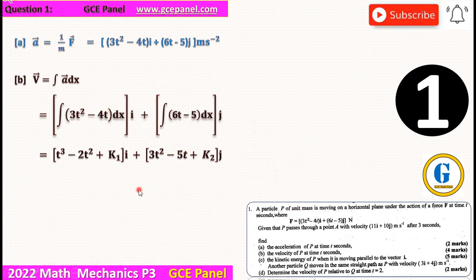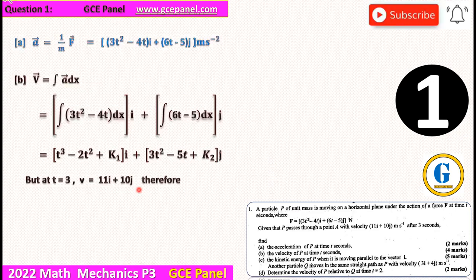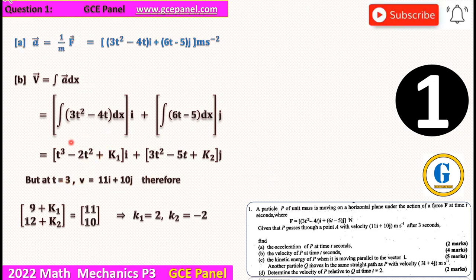But the equation is telling us that at T equals 3 seconds, the velocity of the particle is 11I plus 10 J meters per second. So we are going to use this to find the values of K1 and K2. Substituting the value of T equals 3 in the velocity that we have, and equating to the velocity at the 3 seconds, we are going to have our K1 to be equal to 2 and K2 is equal to minus 2. Therefore, our velocity is T cubed minus 2T squared plus 2I plus 3T squared minus 5T minus 2J meters per second.